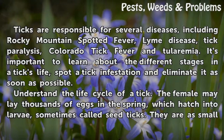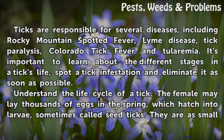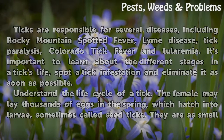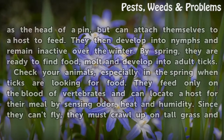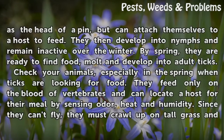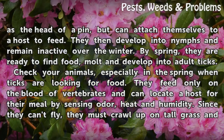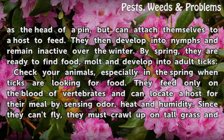Understand the life cycle of a tick. The female may lay thousands of eggs in the spring, which hatch into larvae, sometimes called seed ticks. They are as small as the head of a pin, but can attach themselves to a host to feed. They then develop into nymphs and remain inactive over the winter. By spring, they are ready to find food, molt, and develop into adult ticks.